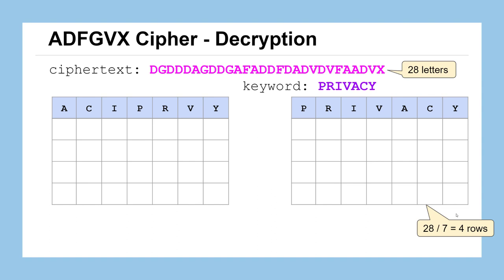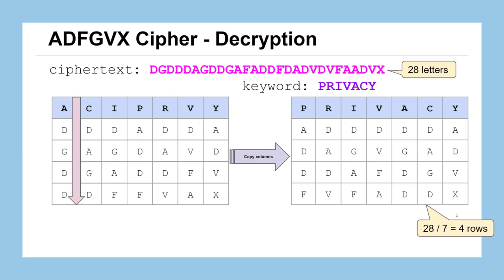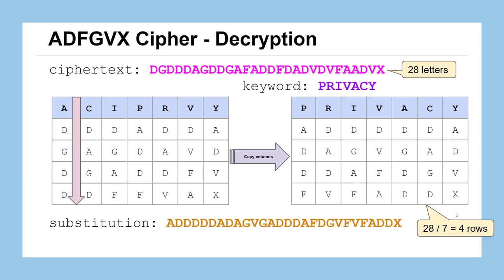Thinking back to how the ciphertext was created — by reading off the columns of the alphabetized table — we take those first four characters, fill them down the first column, then keep going down the remaining columns to complete the alphabetized table. We then copy those columns over into the correct location to fill up the label table that has the keyword 'privacy' across the top. Since the table was filled row by row from the substitution text, we can now pull it off row by row: the first row — A, D, D, D, D, D, A — becomes the first seven characters in the substitution text, and we do that for all 28 characters.